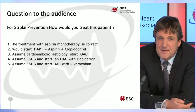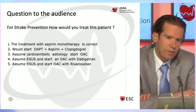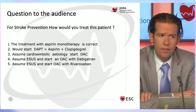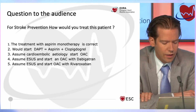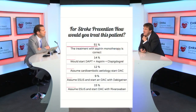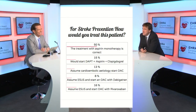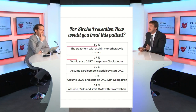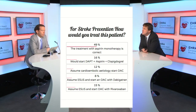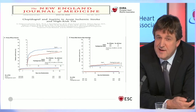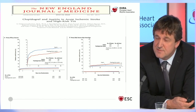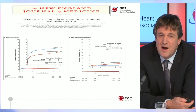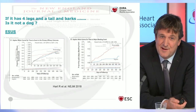Over 50% of the audience would go with aspirin monotherapy, which is indeed what we did. You could also make an argument for dual antiplatelets. Recent evidence from the POINT trial showed that dual antiplatelet therapy in TIA or minor stroke was associated with a 1.5% absolute reduction in ischemic events, but also a 0.5% absolute increase in major bleeding. Antiplatelets are not innocent either, so aspirin monotherapy may have been the right choice here.